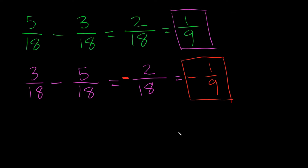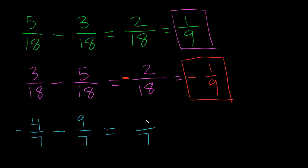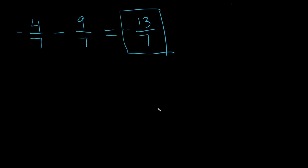If you need a review on how to add and subtract positive and negative numbers, I'll link that in the card above. But I'm going to do a bunch of examples here. What if I had negative 4 over 7 minus 9 over 7? Same denominator, so we keep it. Negative 4 minus 9 is negative 13. This is as reduced as possible. Quick reminder: positive 4 plus positive 9 gives positive 13; negative 4 minus 9 gives negative 13. We've got a minus and a minus, so we get a minus.